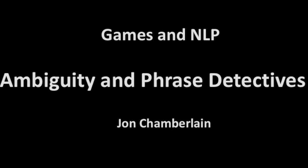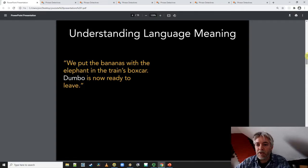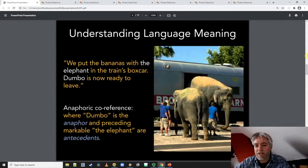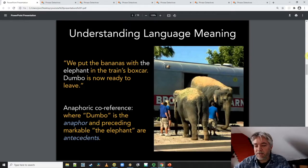Now that was an example of a visual ambiguity, but we get similar ambiguity within language. So in this straightforward piece of text: 'We put the bananas with the elephant in the train's boxcar. Dumbo is now ready to leave.' You can be reasonably sure that when we say the word Dumbo, we mean the elephant, because we know there's a famous elephant called Dumbo and in our minds that triggers the fact that we're talking about an elephant here and not a train or some collective term for bananas. This is what's called anaphoric co-reference, where Dumbo in this case is an anaphor and the preceding markable or piece of text — in this case, the elephant — is what we call an antecedent.